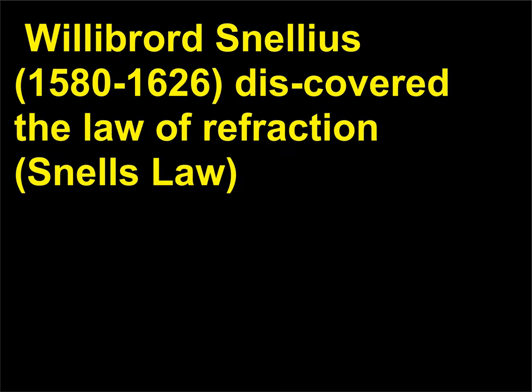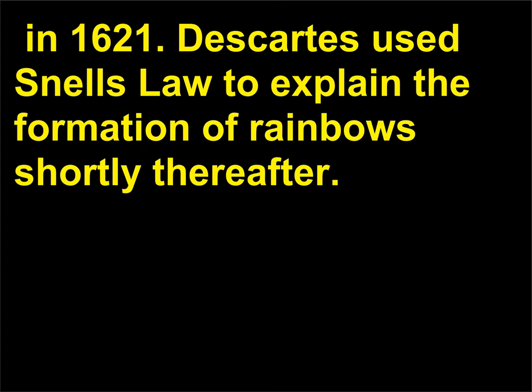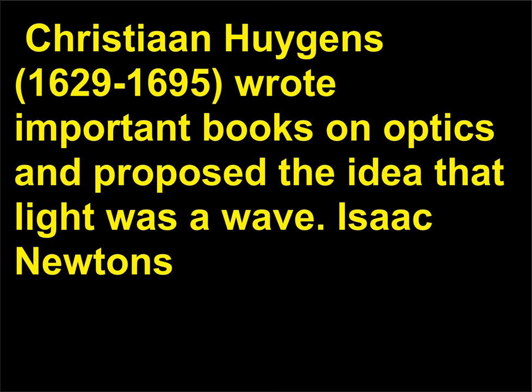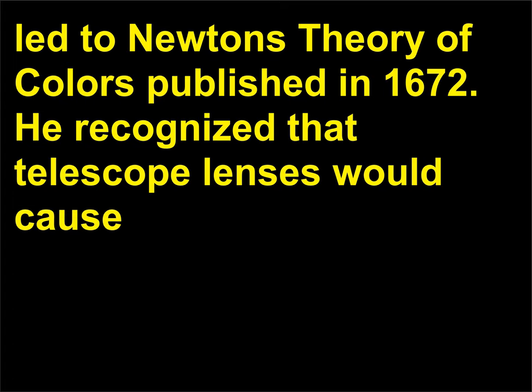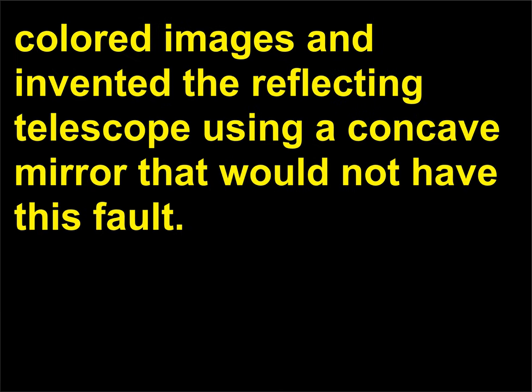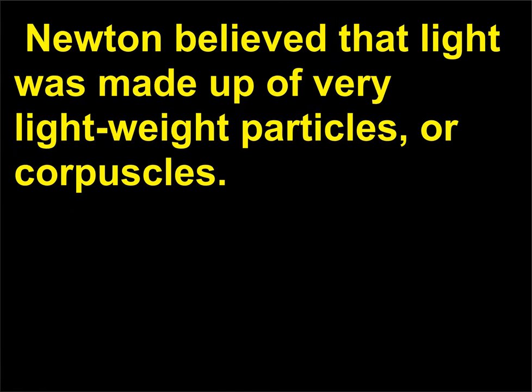Christian Huygens (1629-1695) wrote important books on optics and proposed the idea that light was a wave. Isaac Newton's (1642-1727) celebrated experiments using a prism to separate white light into its colors led to Newton's theory of colors published in 1672. He recognized that telescope lenses would cause colored images and invented the reflecting telescope using a concave mirror that would not have this fault. Newton believed that light was made up of very lightweight particles, or corpuscles.